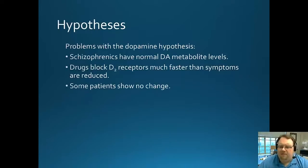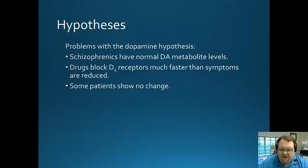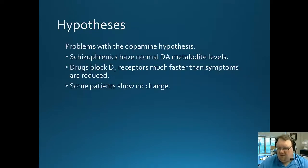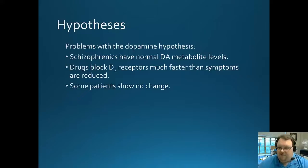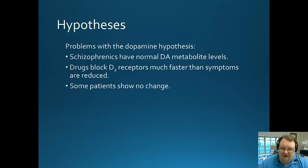However, there are problems with the dopamine hypothesis. First, individuals with schizophrenia actually have normal dopamine metabolite levels, meaning they most likely have normal dopamine levels. Also, drugs that block the D2 receptors do so much faster than we see symptoms being reduced. And about 30% of patients show no change — so why would it work for some and not others if this were truly the mechanism?